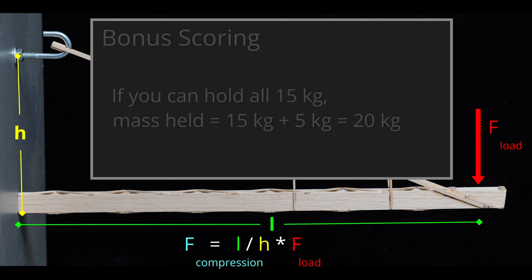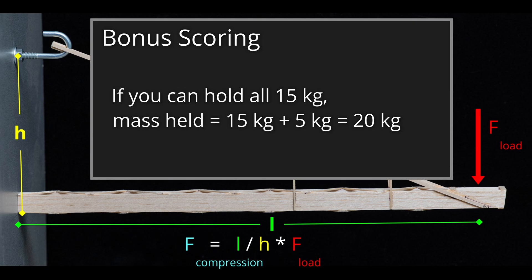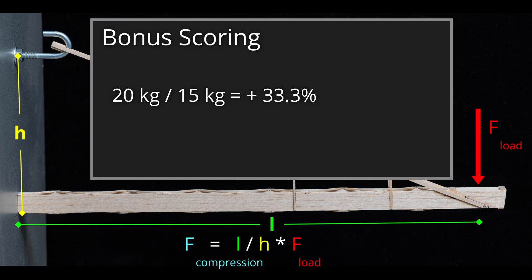To see if it's worthwhile to design a Boomi that needs to withstand 50% more force, we need to look at the bonus scoring. If your bonus Boomi can hold the entire 15 kg, you get an additional 5 kg added to your mass held or effectively 20 kg. 20 vs 15 kg is 33.3% more scoring potential.